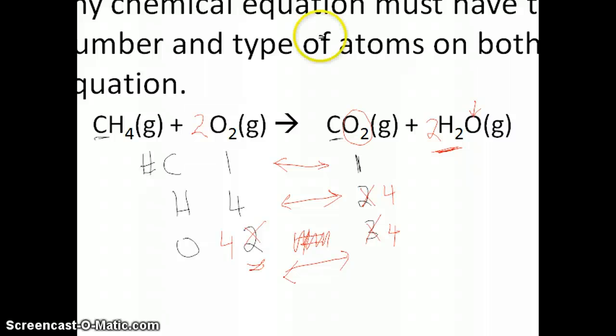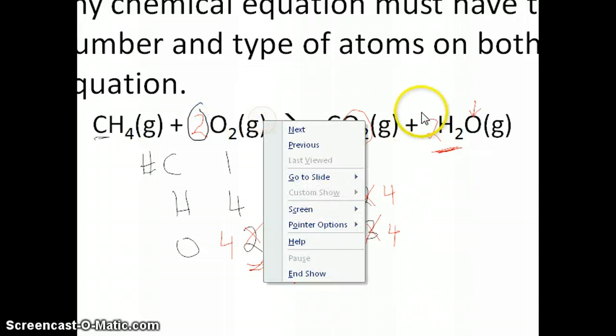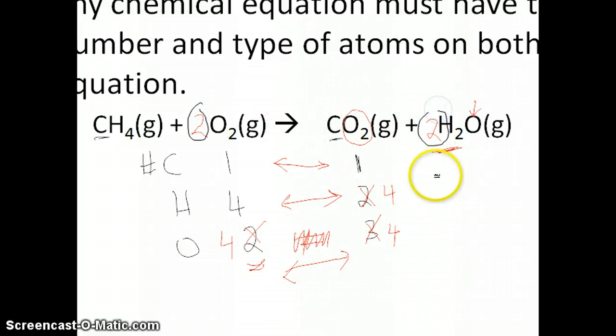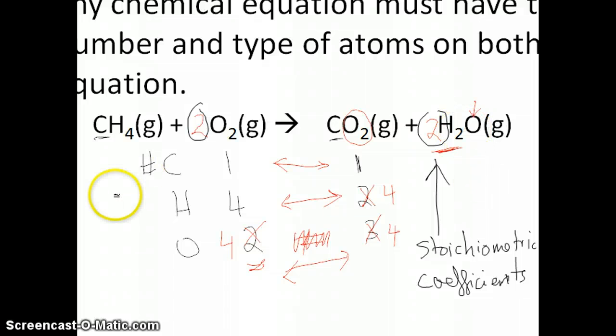Just going back to the equation that we balanced earlier, the numbers that we put in here, two for oxygen and two for water, those are what we call stoichiometric coefficients. So they're called stoichiometric coefficients. And sometimes other textbooks, certain textbooks, we just call them coefficients, but it means it's the number that you use to multiply the entire formula you have in the equation. So for the ones where you don't put any number, then it's just one, right? But there is an understanding that if you don't put any number in front of it, that means that you're multiplying by one.